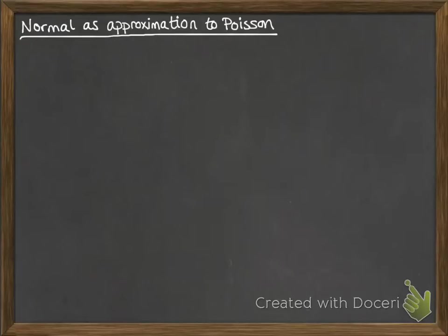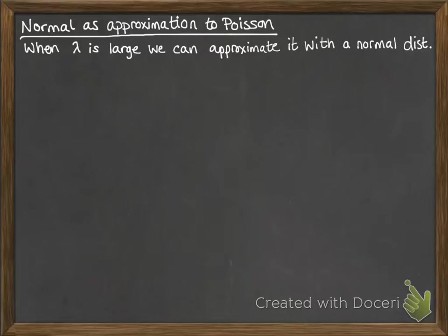Okay, using the normal distribution as an approximation to the Poisson distribution. This works in a similar way to what you did last year where you would approximate a binomial distribution with the normal.